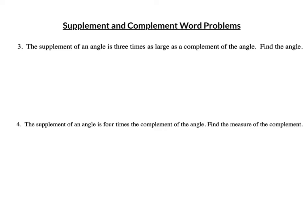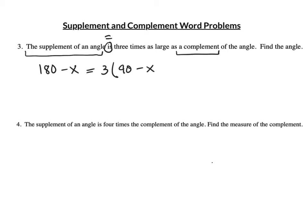Number 3: The supplement of an angle is three times as large as the complement of the angle. Find the angle. The complement is 90 minus x; the supplement is 180 minus x. It is — it's equal — three times the complement. And the complement is 90 minus x. So all I need to do is distribute that 3, get the x's on one side and solve. Make sure you distribute.